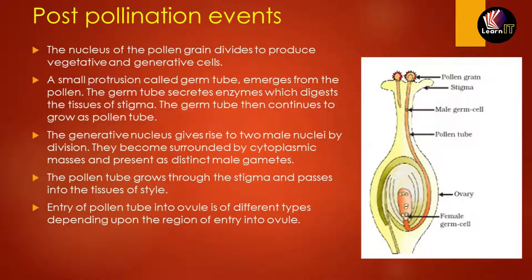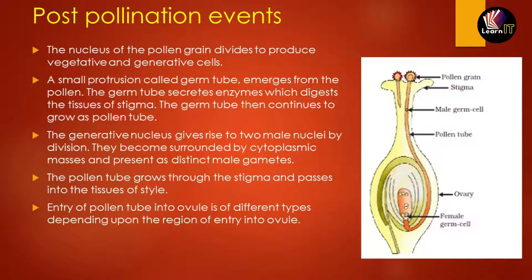Looking at the diagram, we have two circular structures on top of the stigma, which are basically pollen grains. This can involve cross-pollination or self-pollination. The female part has been divided into three parts: stigma, style, and ovary. The pollen grains contain two nuclei: one is the vegetative nucleus and the second is known as the generative nucleus. Whenever the pollen grains stick to the stigma, they make a small protrusion called a germ tube.